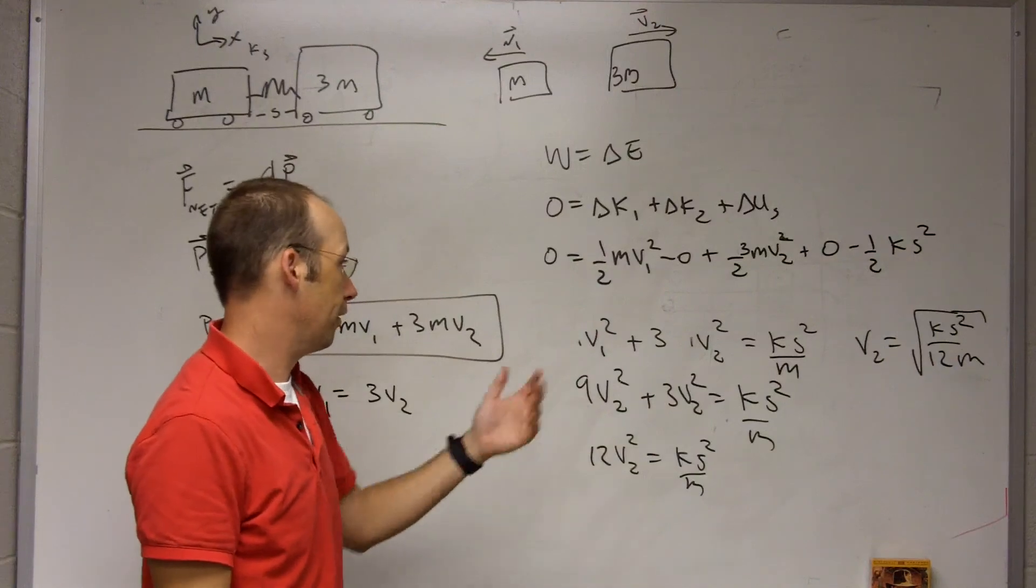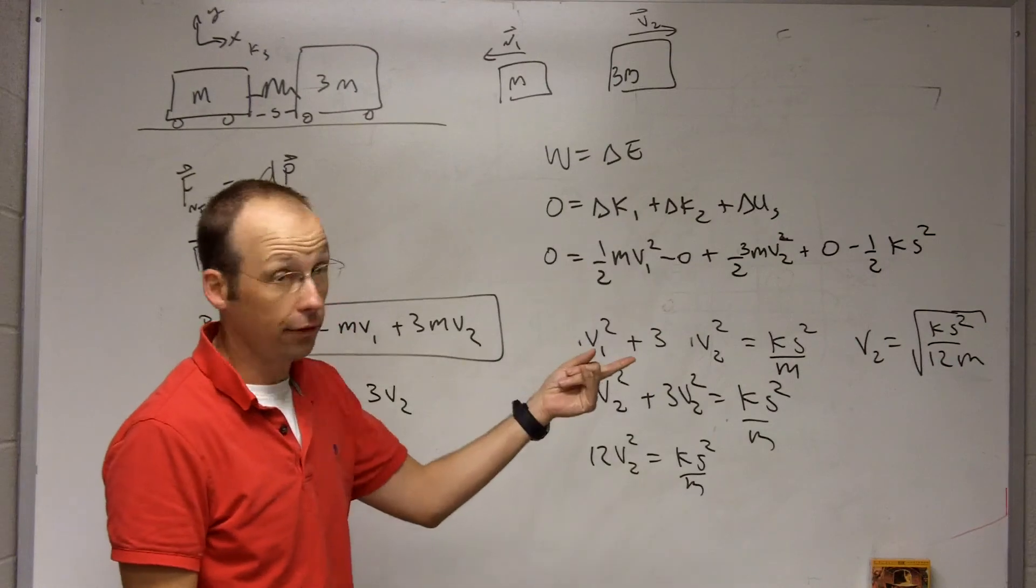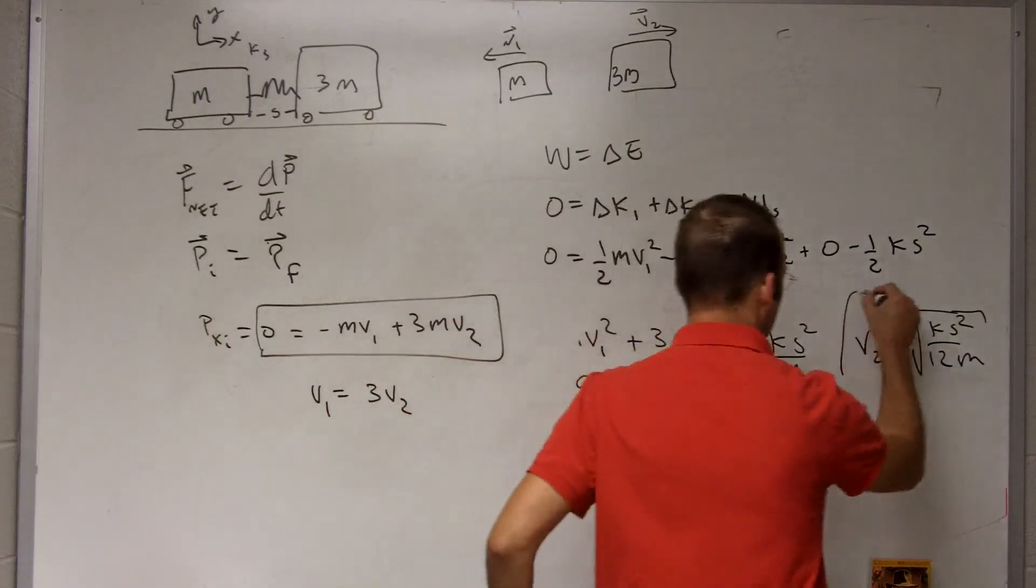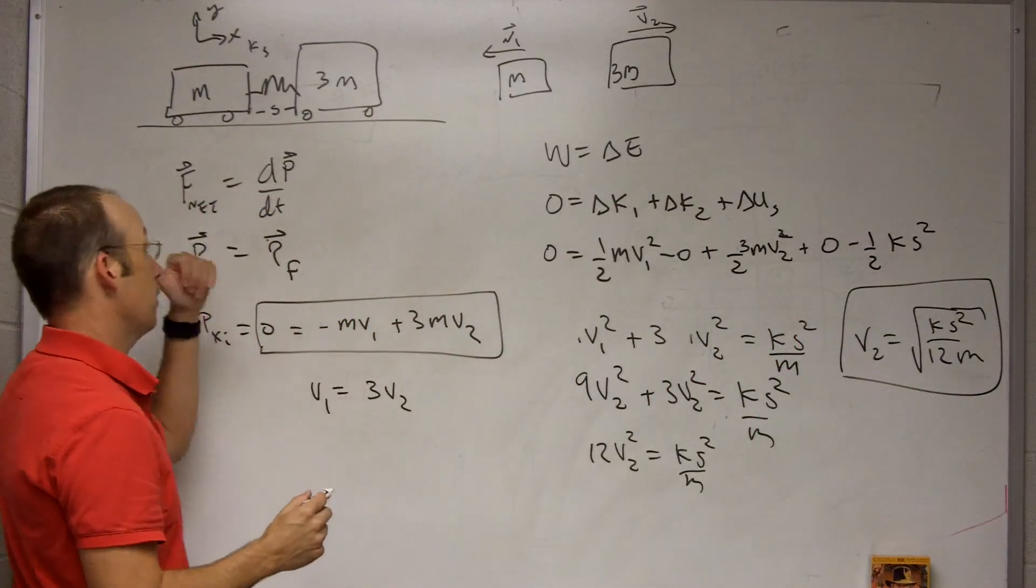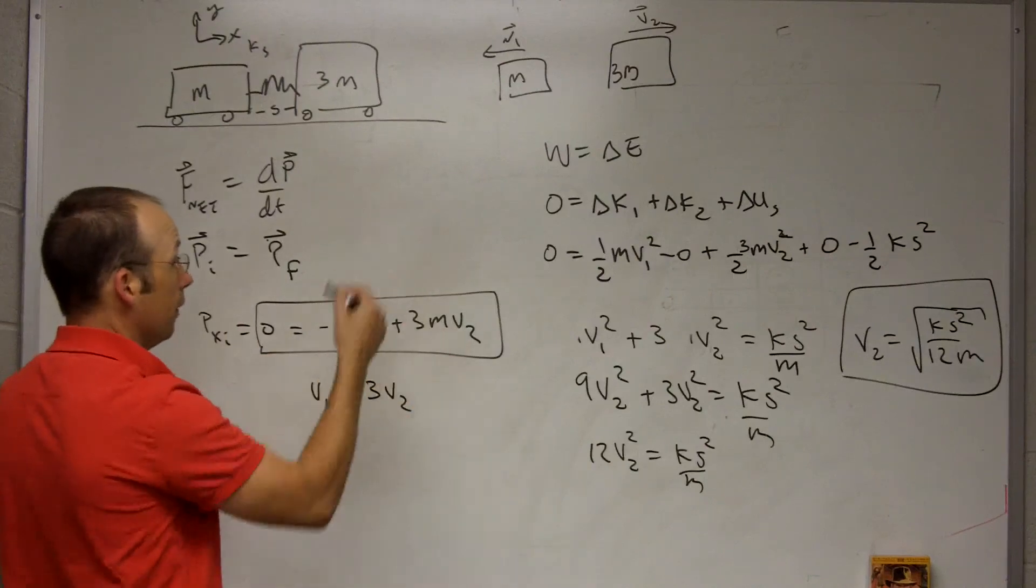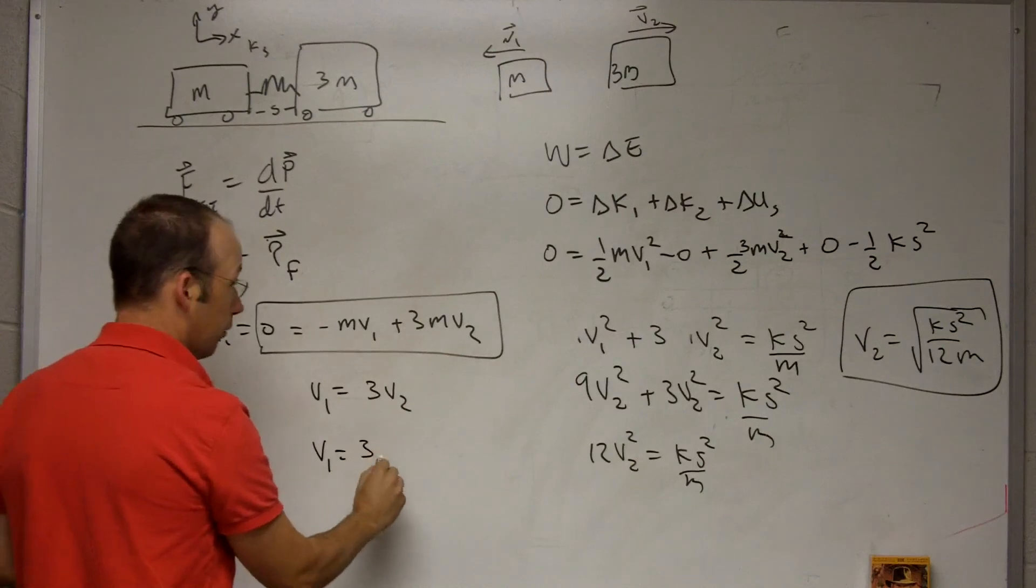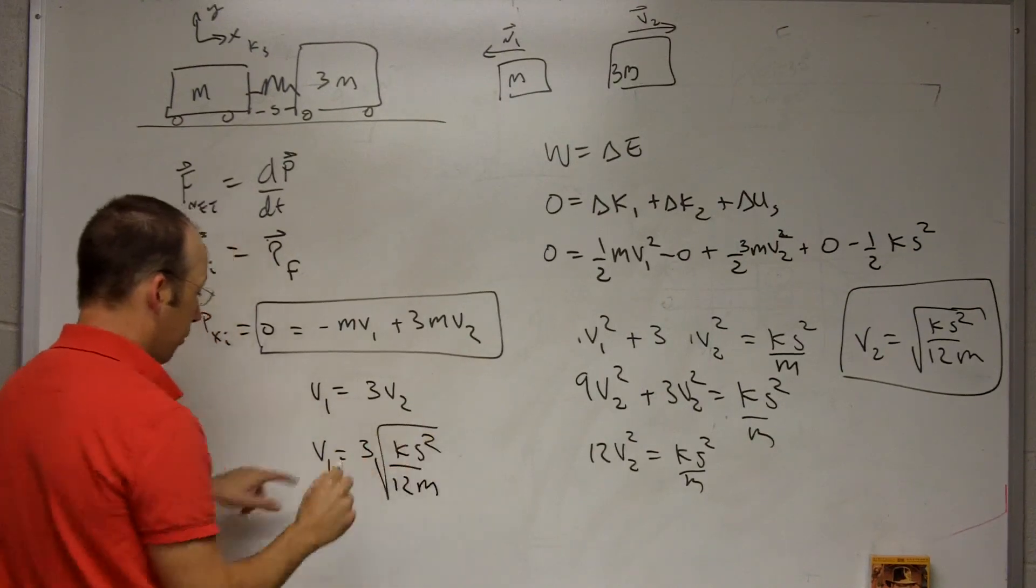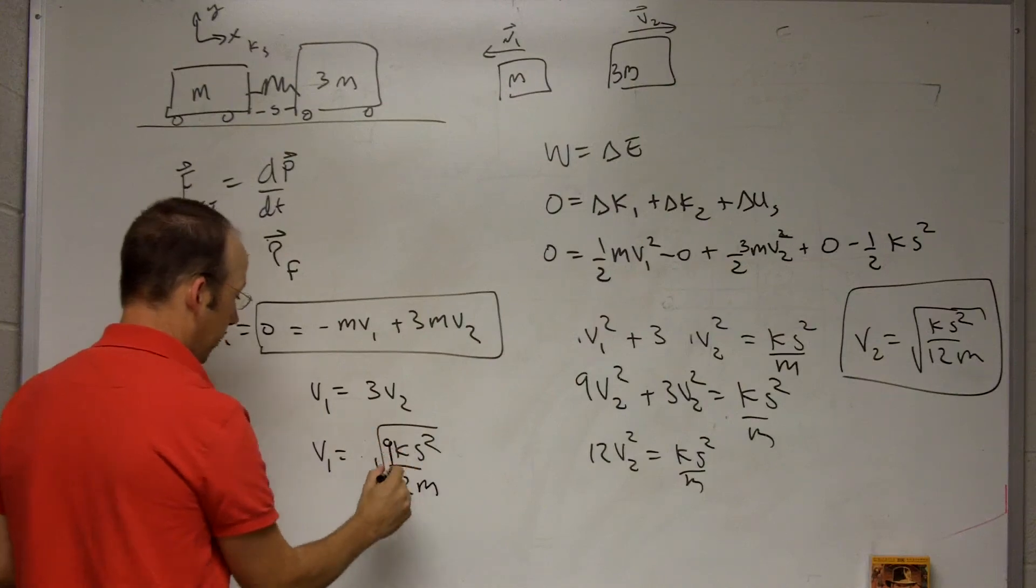And if you check the units, it does have the right units. And that's the answer. There's no numbers. I know that makes some people uncomfortable, but that's the answer for one of the masses. And then the other mass is going to have a velocity. Actually, this is the magnitude of the velocity. We know it's moving in the negative direction. V1 is just going to be 3 times that. So 3 times the square root of KS squared over 12M.